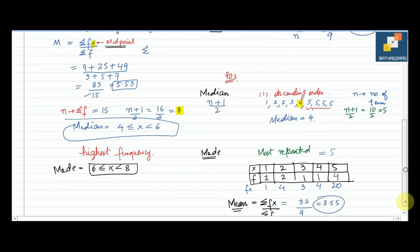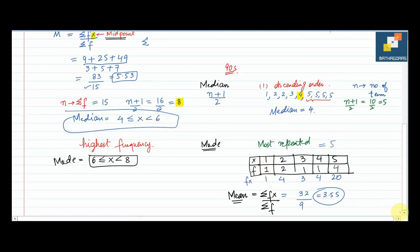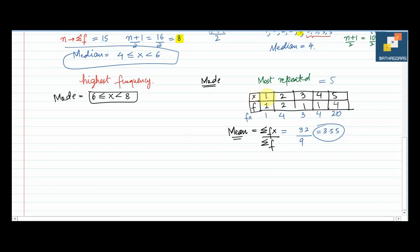Keep in mind: this tabular style data is ungrouped data, not grouped data. Mostly people think it is grouped data, but it is not. For grouped data, make sure you have class intervals like 1–2, 2–3, 3–4. That type of data is grouped data.